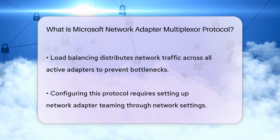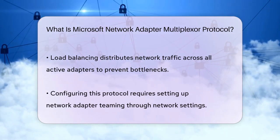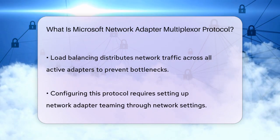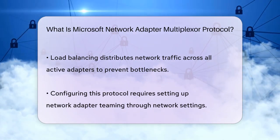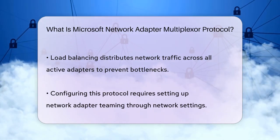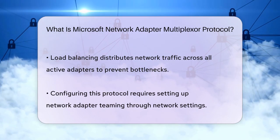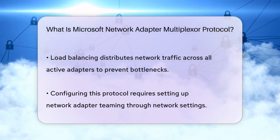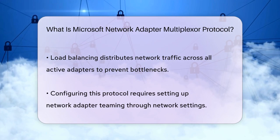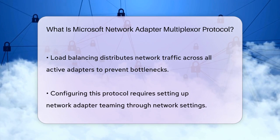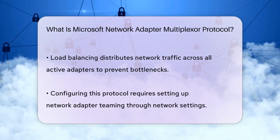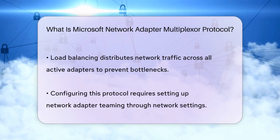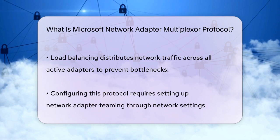To set this up, you need to configure network adapter teaming, which involves selecting the network adapters you want to combine and enabling the Microsoft Network Adapter Multiplexer Protocol through your network settings. This process is relatively straightforward and can be done through the Network and Sharing Center or using PowerShell commands.